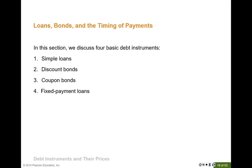In the financial system there exist four basic debt instruments. The first one is simple loans, the second one is discount bonds, the third one is coupon bonds, and the last one is fixed payment loans. I'm going to explain the differences — please keep in mind the unique feature of each debt instrument, in particular how each debt instrument makes payment.